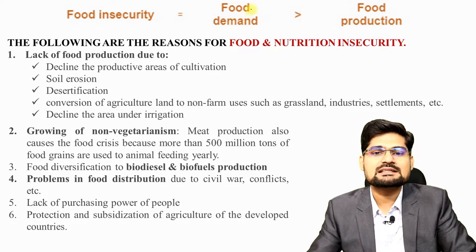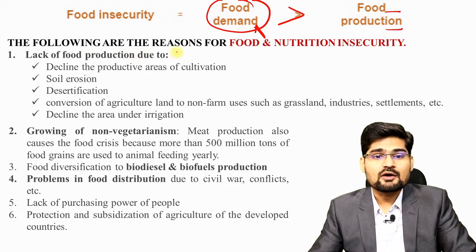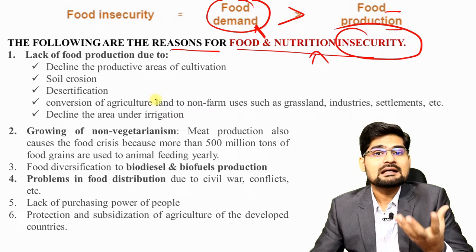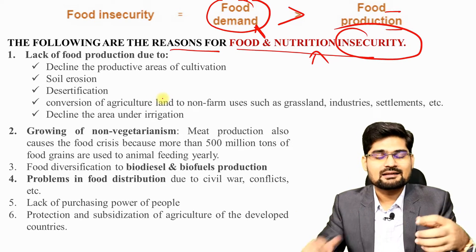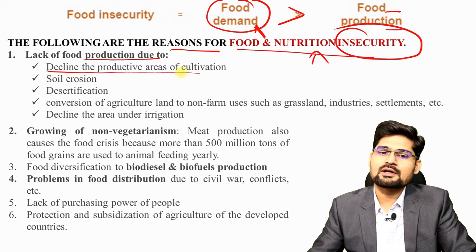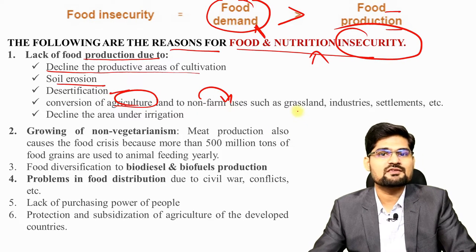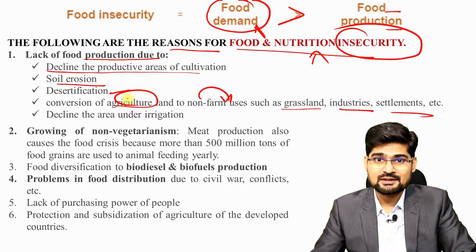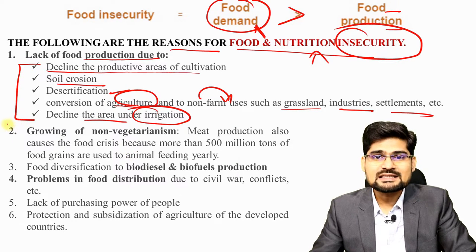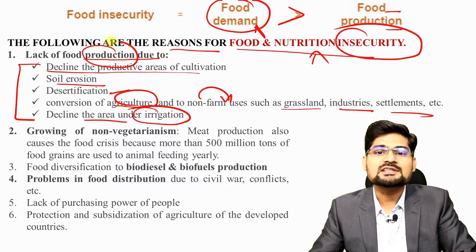Food insecurity occurs basically when food demand exceeds food production — when production is less and demand is too much. The reasons for food and nutrition insecurity include lack of food production due to several factors: decline in productive areas of cultivation, degradation, soil erosion, desertification, conversion of agricultural land to non-farm usage such as grassland, industry and settlements, urban expansion, and decline in the area under irrigation.